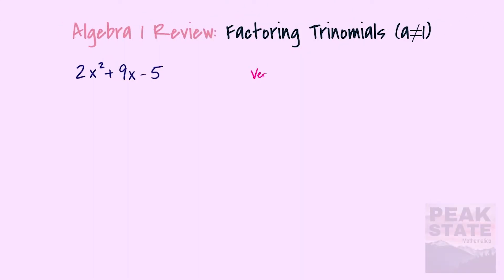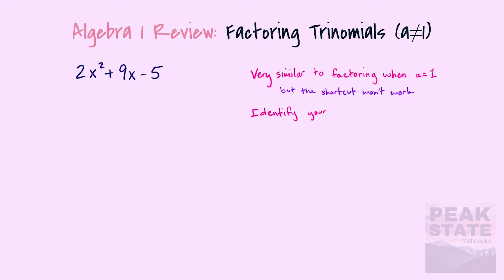Welcome back to Peak State Mathematics. We're going to take a look at factoring trinomials where a is not equal to one, so we're not going to be able to use the shortcut we've looked at when a equals one. It's very similar — we want to identify our a, b, and c terms. In this case, a equals two, b equals nine, and c equals negative five.